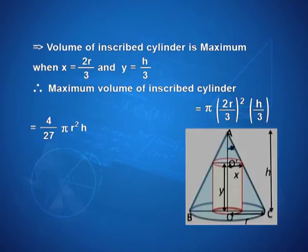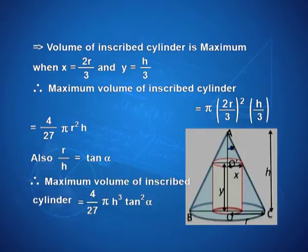So, let us relate h and r in terms of α. Plain trigonometry tells us nothing but r/h is tan α. So, I can always replace r by h times tan α. And therefore, the maximum volume of inscribed cylinder turns out to be 4/27 π h³ tan² α. And that is exactly what the requirement of the question was.